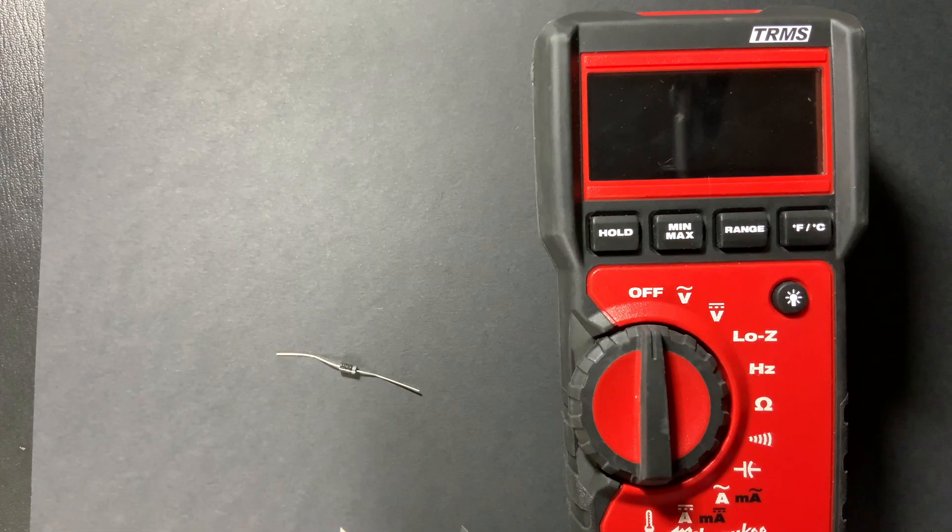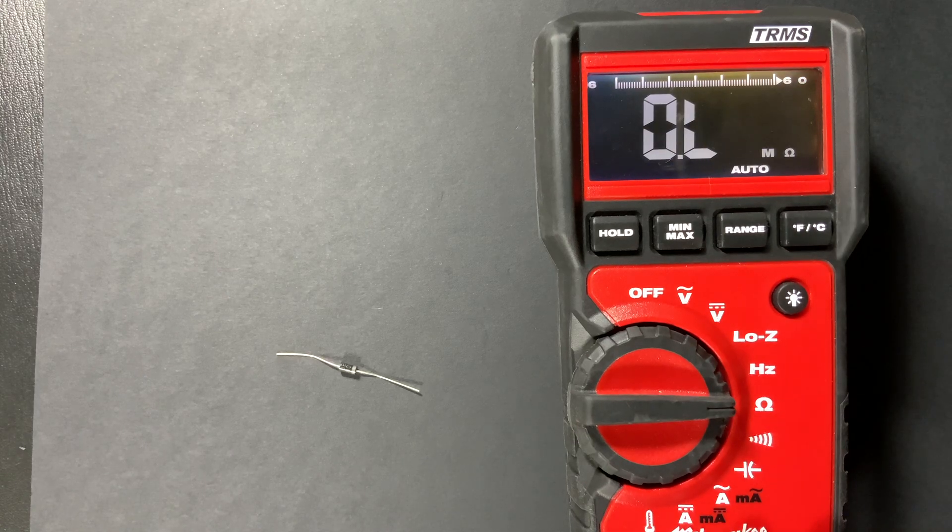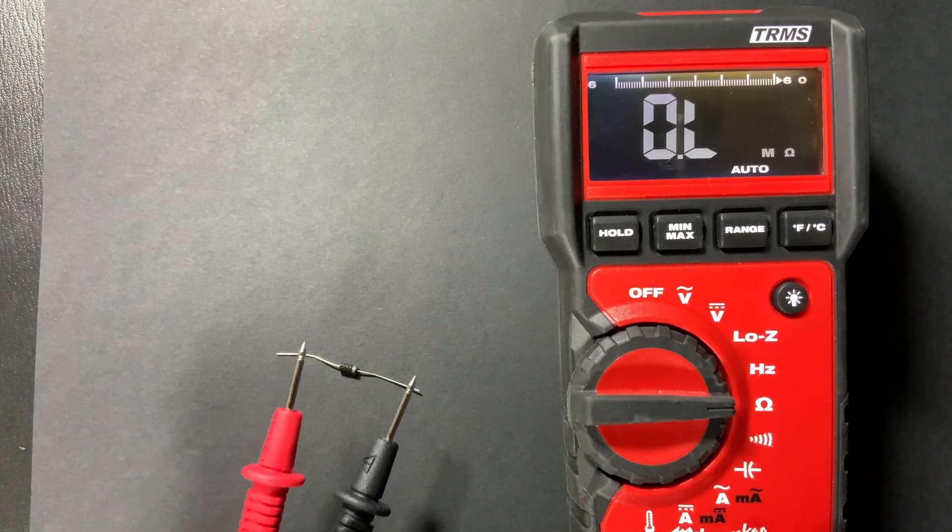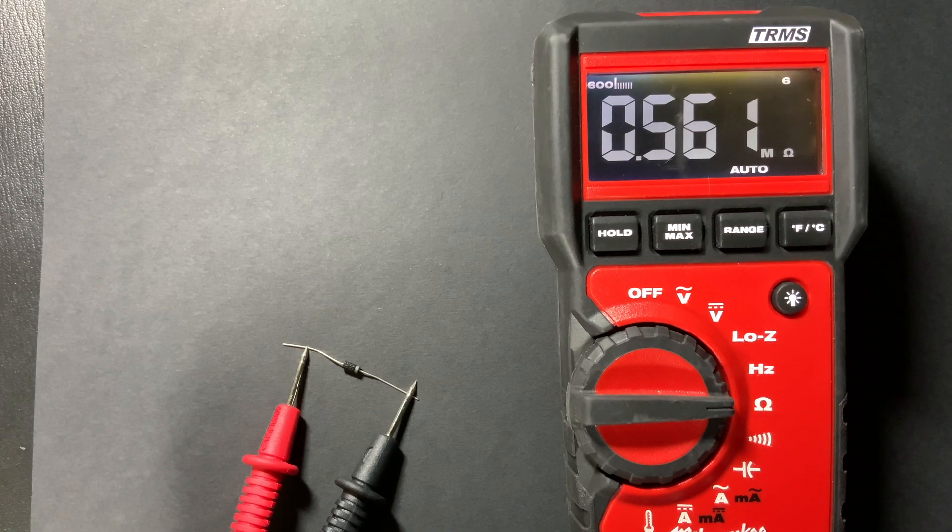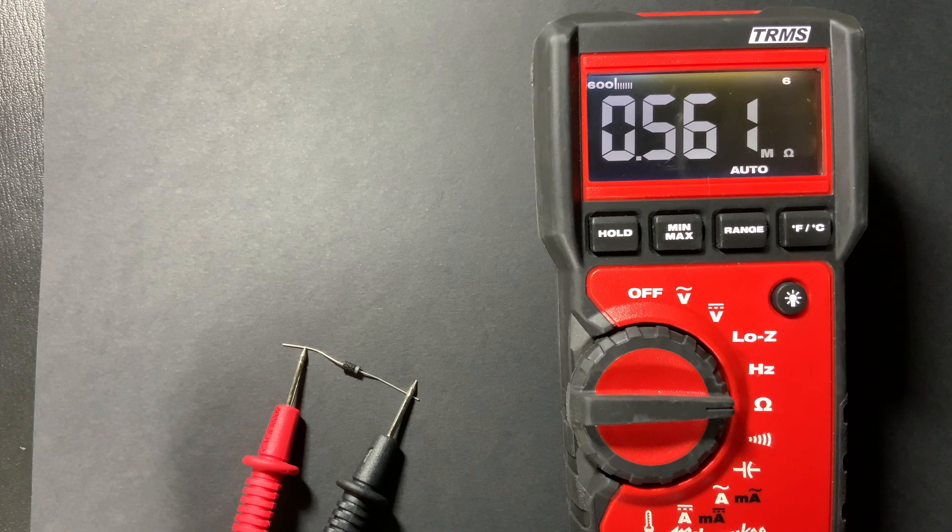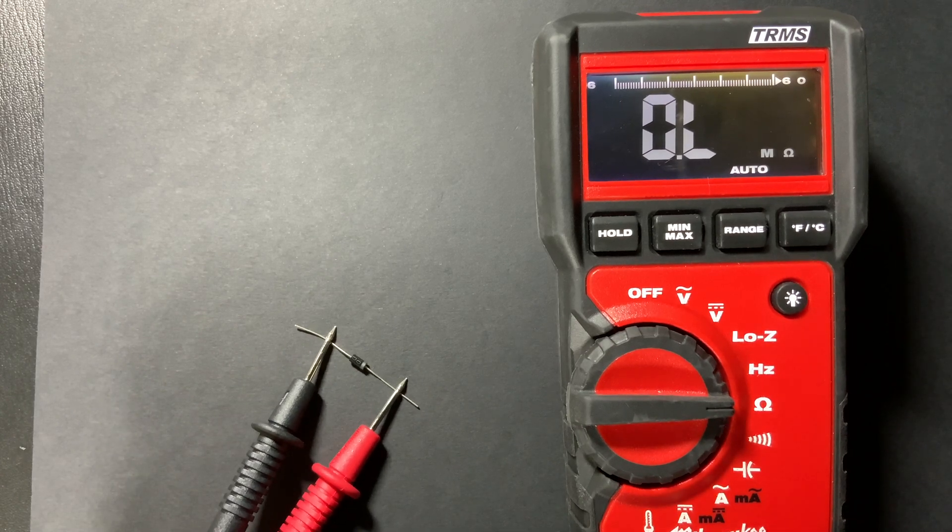Okay now if you remember our meter before it didn't have a diode test. But you can actually test diodes using the resistance setting. So if you turn your meter to resistance and you measure the diode in forward bias you're going to get a high reading. You saw that was 0.5 mega ohms. Now if you reverse it you should get open line.